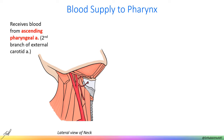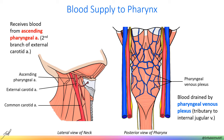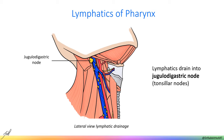Blood supply to the head and neck comes from the common carotid arteries, which branch into internal and external carotid arteries. Blood supply to the pharynx comes from the ascending pharyngeal artery, which is the second branch off the external carotid. Deoxygenated blood is then collected in the pharyngeal venous plexus and drained into the internal jugular vein. Lymph from the pharynx is drained to the jugulodigastric nodes, sometimes called the tonsillar nodes, which are located just inferior to the angle of the mandible.